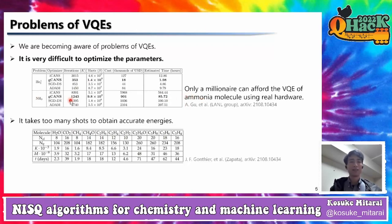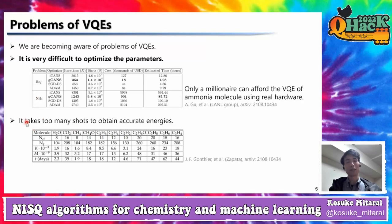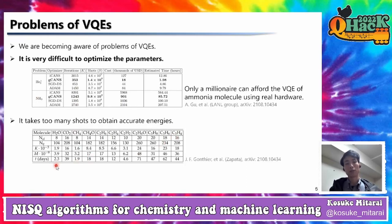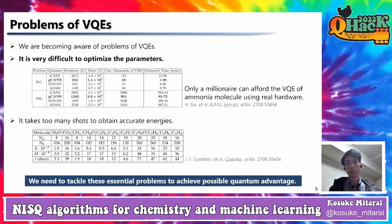We can perform the calculation of a small molecule on a classical computer on a laptop, but if we want to do that on a quantum computer we need a million dollars. It also takes too many shots to obtain accurate energies — we'd have to measure for days and months to know the energy of our state. In this talk, I will present some of our recent approaches to tackle these problems. We need to tackle these essential problems to achieve possible quantum advantage using NISQ devices.